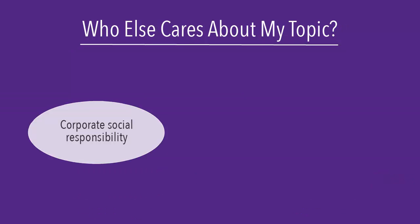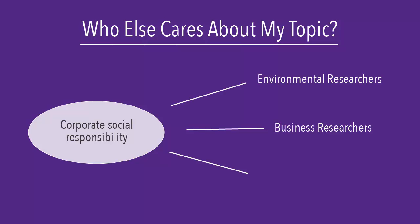It's also a good idea to think about which disciplines might have written something on your topic. People from several fields might be interested in corporate social responsibility, and they will all have unique points of view that can be helpful to my research paper. For example, I might want to search environment and public policy databases in addition to business databases for this topic.